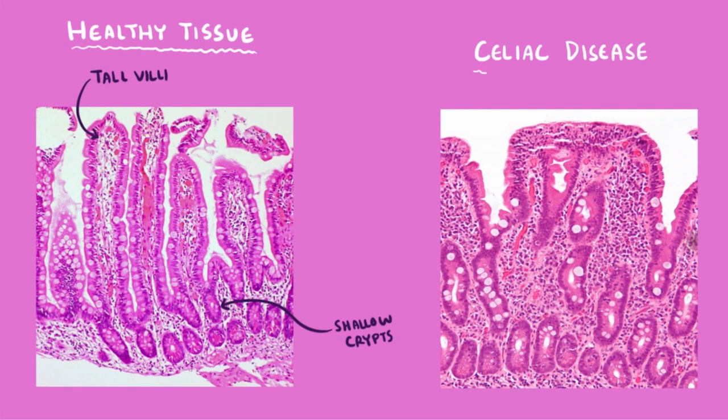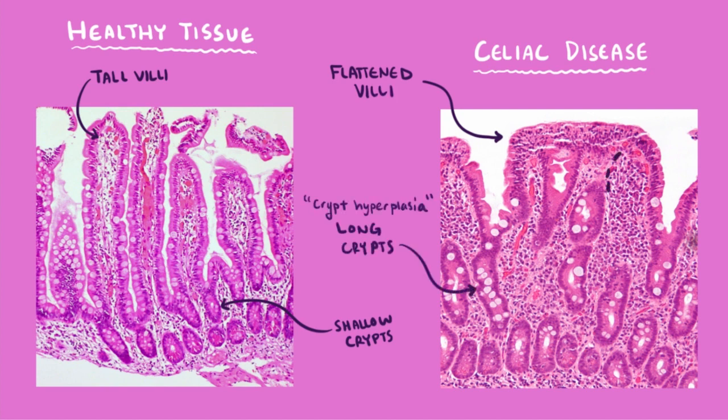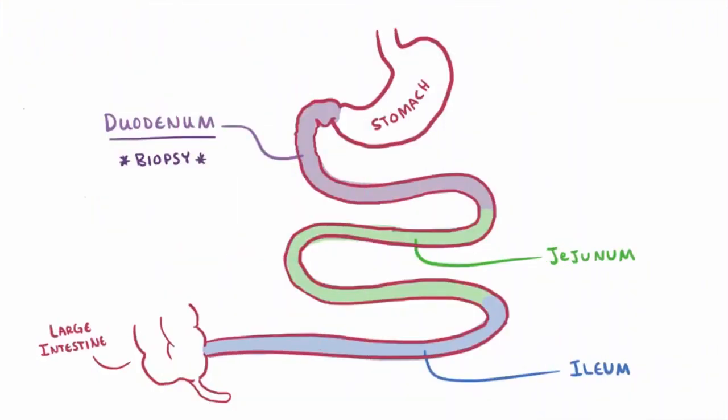A healthy duodenum should look a little like this, where you have these really tall villi and these crypts that don't go down too far. With celiac disease these villi are destroyed and flattened out and the crypts also get longer, which is called crypt hyperplasia. You'll also be able to see this infiltration of immune cells, or lymphocytes, in the epithelium. An endoscopic biopsy of this tissue can be an effective, but more invasive way to diagnose celiac disease.